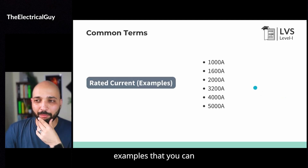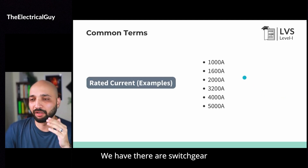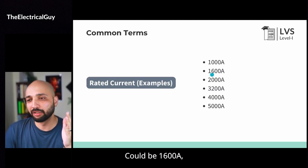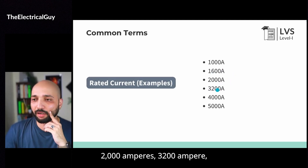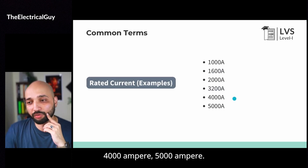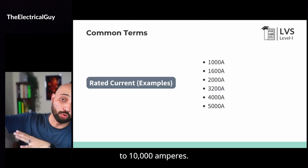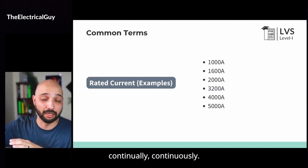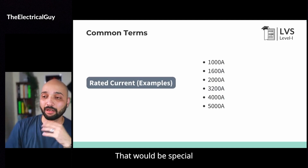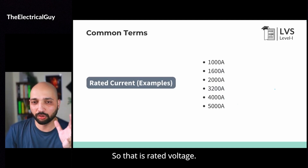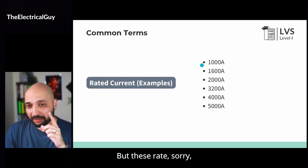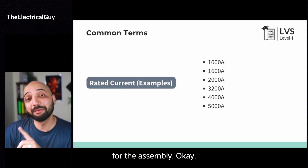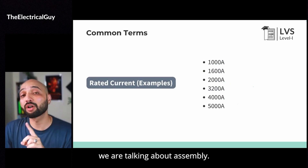So it's very important that you select this based on what the system current is. There are some different examples you can see on your screen. We have switchgear capable of carrying less than 1000 amperes, could be 1600, 2000 amperes, 3200 amperes, 4000 amperes, 5000 amperes, and it could go also to 10,000 amperes. There are switchgear available which can carry 10,000 amperes continuously — that would be for special applications. So that is rated current, but this rated current is for the assembly, not the circuit.